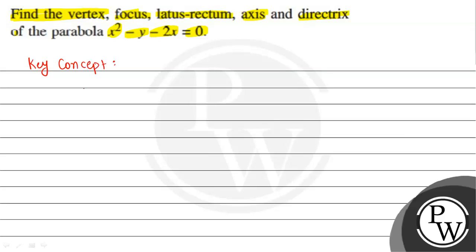The key concept to solve this question — suppose this is the xy plane and we have this upward parabola with horizontal axis x. Its vertex is at the origin. The distance shown here is known as the latus rectum, and the vertical y-axis is known as the axis of the parabola.